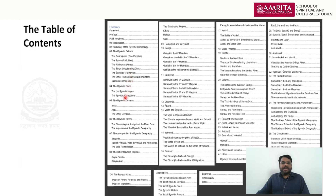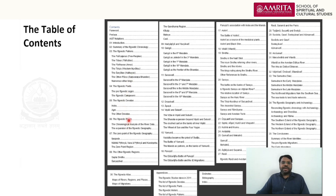From chapter six onwards — our sixth session — we will start understanding the Rig Vedic rivers: Sarasvati, Ganga, Yamuna, Prishadvati, Apaya, Parushni, Shutudri, Vitasta, Vipash. These rivers will be explored in detail along with their geographical significance in the Rig Vedic period.